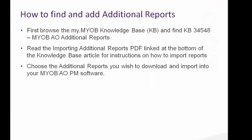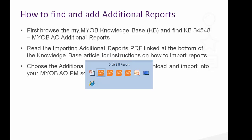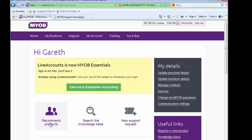Now I've talked about those additional reports — the two key ones used today are the Debtor Invoices by Code Type Summarised and the Adjustments report. Let's have a look at how we can find and download those from our system. I'm going to go to our website.